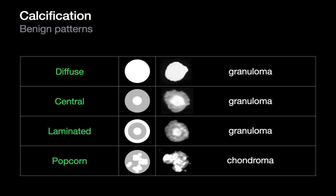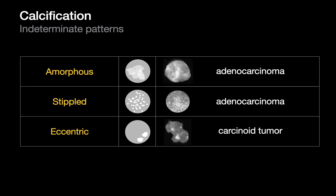Calcification patterns fall into two groups. Pathognomonic for benignity are four types: diffuse, central, laminated, and popcorn calcification patterns. Diffuse calcifications are uniform complete same-density calcification throughout the nodule. Central calcifications are uniform same-density calcification dead center in the nodule. Laminated calcifications are targetoid. Popcorn calcifications are chunky but all of the same density. The indeterminate patterns to be careful about are amorphous — where calcification varies in density — stippled, composed of really fine little dots of calcification, and eccentric, where one or a few foci of calcification are not dead center but off to the side.